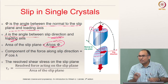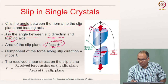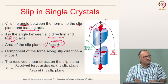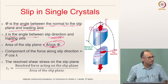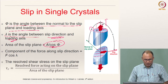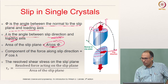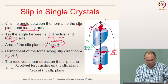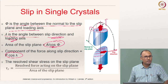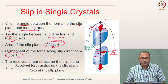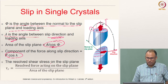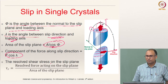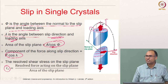What is the component of the applied force F along the slip direction? The component of force acting along the slip direction is F cos lambda. To calculate the resolved shear stress, you take the resolved force acting on the slip plane divided by the area of the slip plane. That quantity is what we call the resolved shear stress.